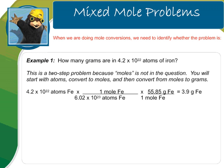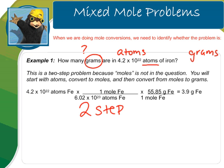Let's look at some examples. Example one: How many grams are in 4.2 times 10 to the 22 atoms of iron? The given is in atoms and the unknown is in grams. The word mole is not in this problem, so we can identify that it is going to be a two-step problem. In a two-step problem, you convert to moles in the middle. So for this one, we would start with atoms, convert to moles, and then go from moles to grams.